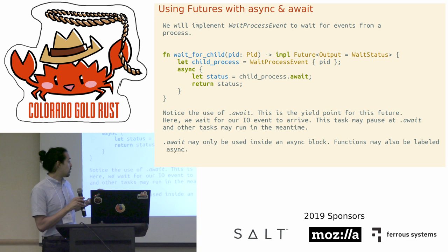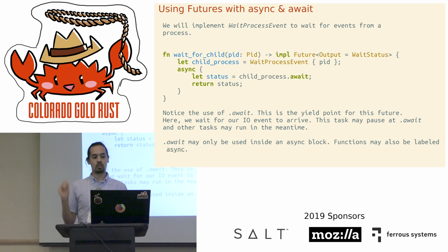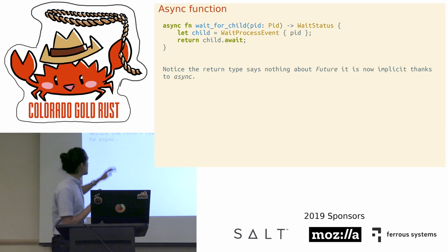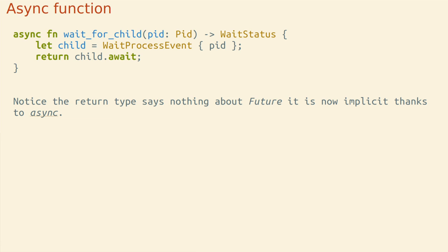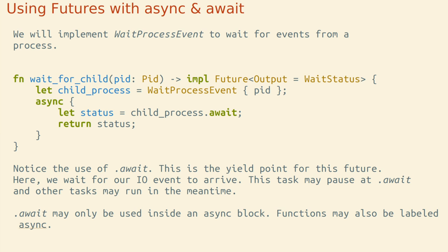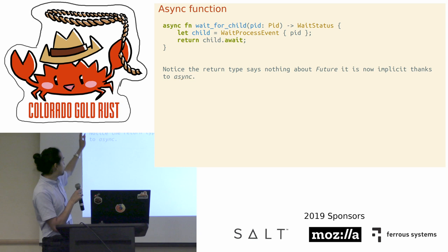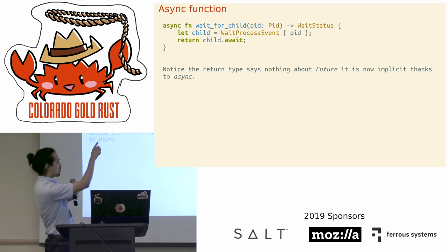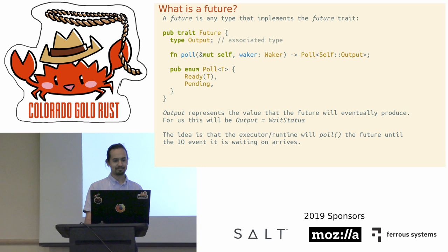To use .await, you may only use it inside an asynchronous block. One cool thing is that async can also be used at the function level. This is the exact same function written with async fn: the entire body becomes an async block, so you no longer need that explicitly. Similarly, the return type changes — it's no longer impl Future<Output = WaitStatus>, it's just WaitStatus. Anytime you see an async function returning WaitStatus, remember implicitly it's returning a future.